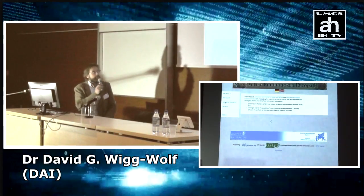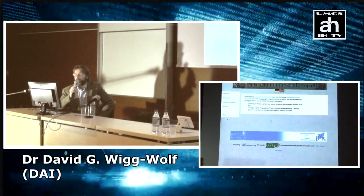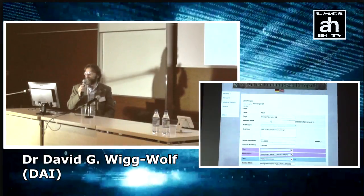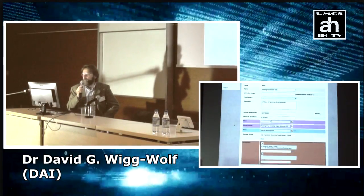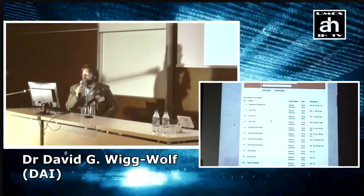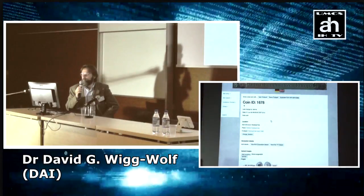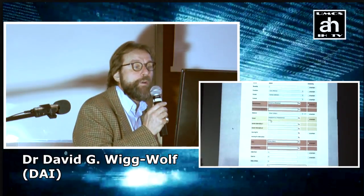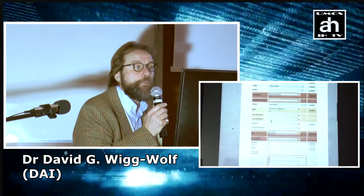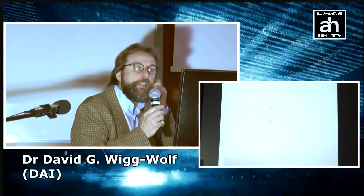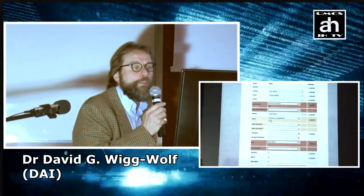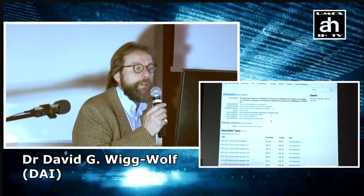Let me show you how the database works. For example, we can bring up a list of find spots in the database and go and look at one particular find spot. This is a coin hoard from to the north of Frankfurt, from Niedergirmes, found in 1990. We have below a list of coins in that hoard. We then come through to one particular coin, and this we are linking through to Nomisma, so that you can link into the broader world of numismatics. For example, if you click on the link you will get the Nomisma definition for Denarius, or if you click on this link you will get the Nomisma definition for Vespasian.